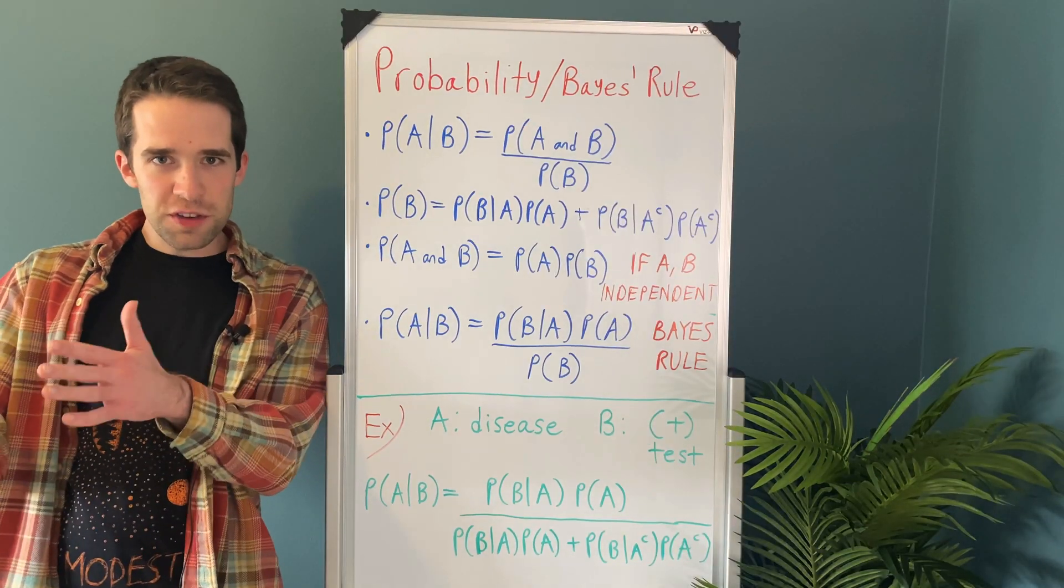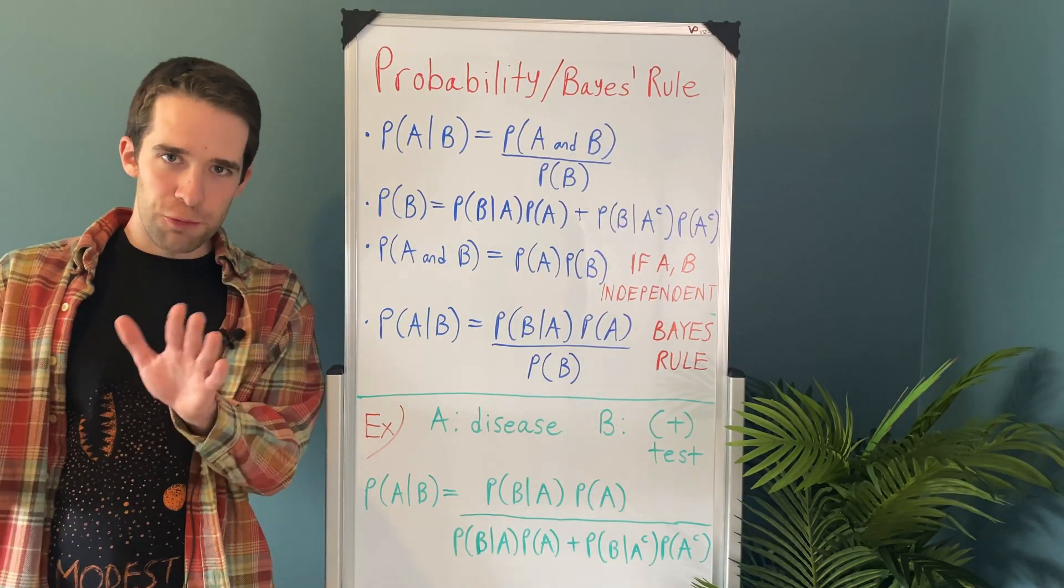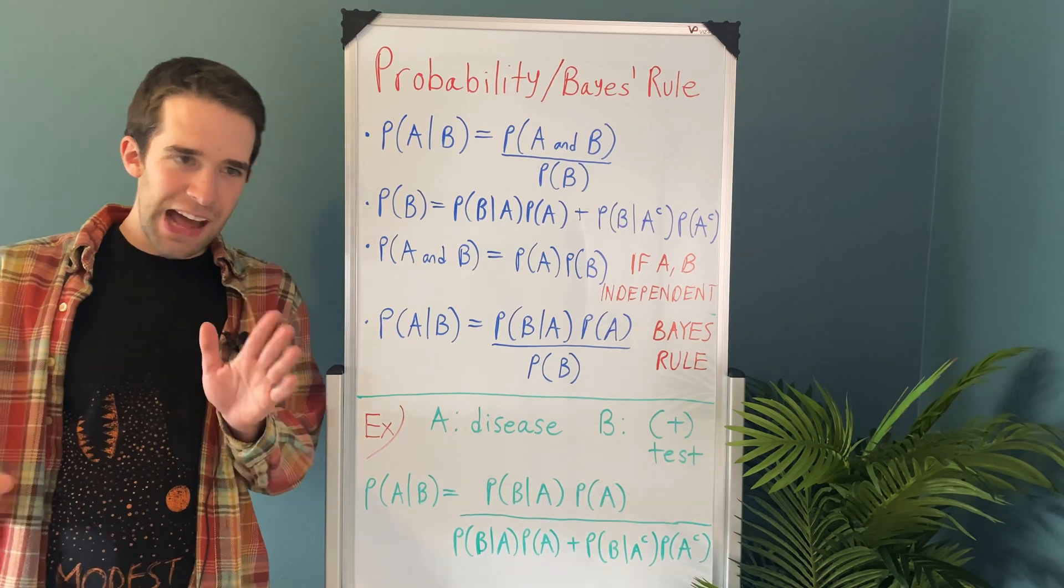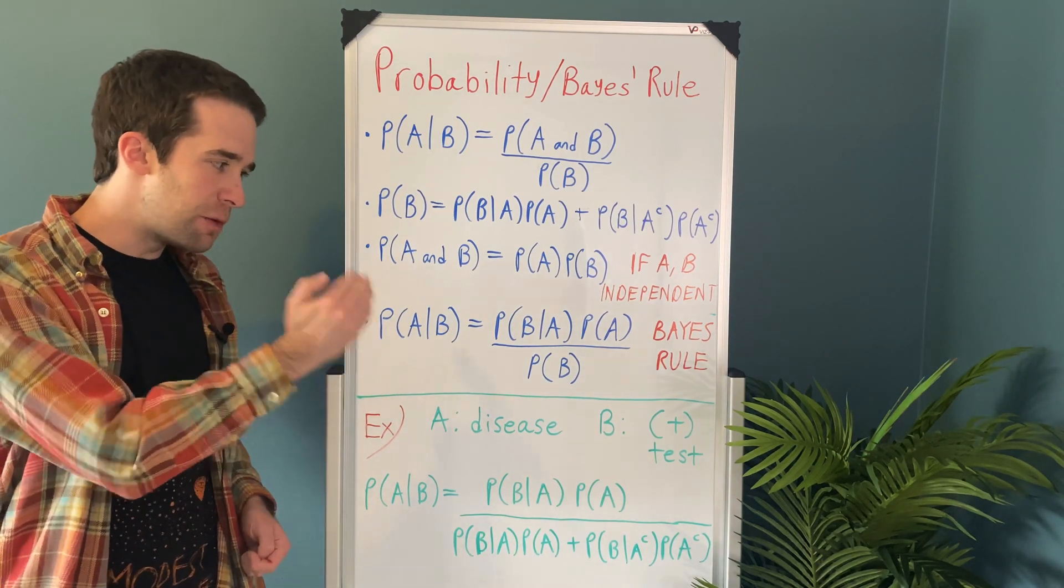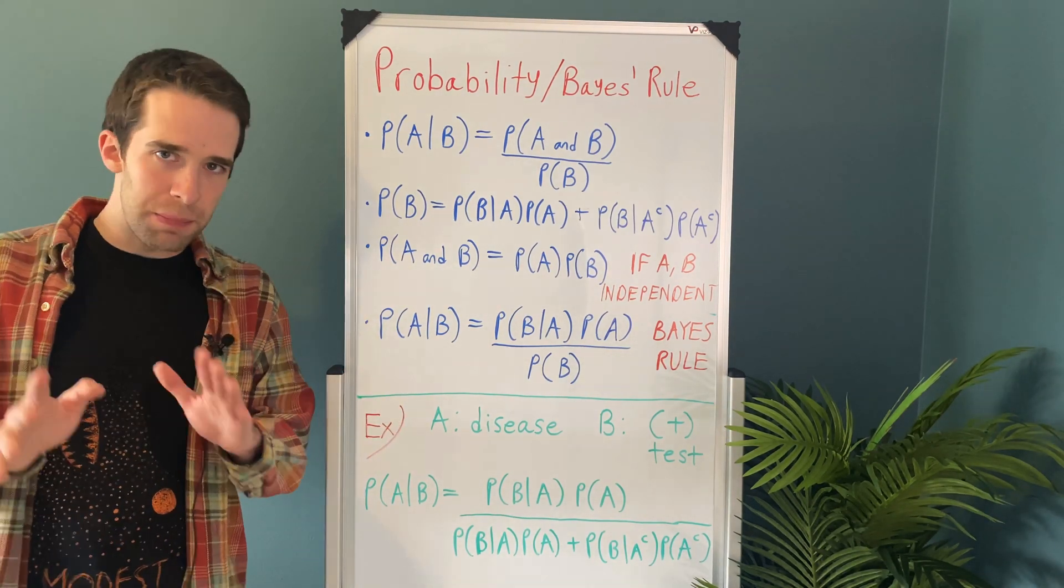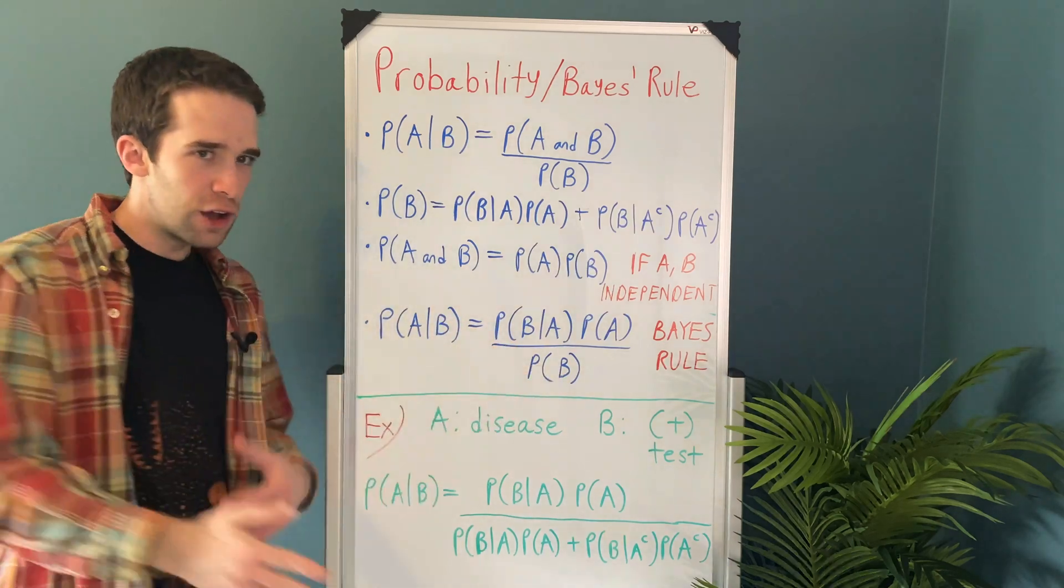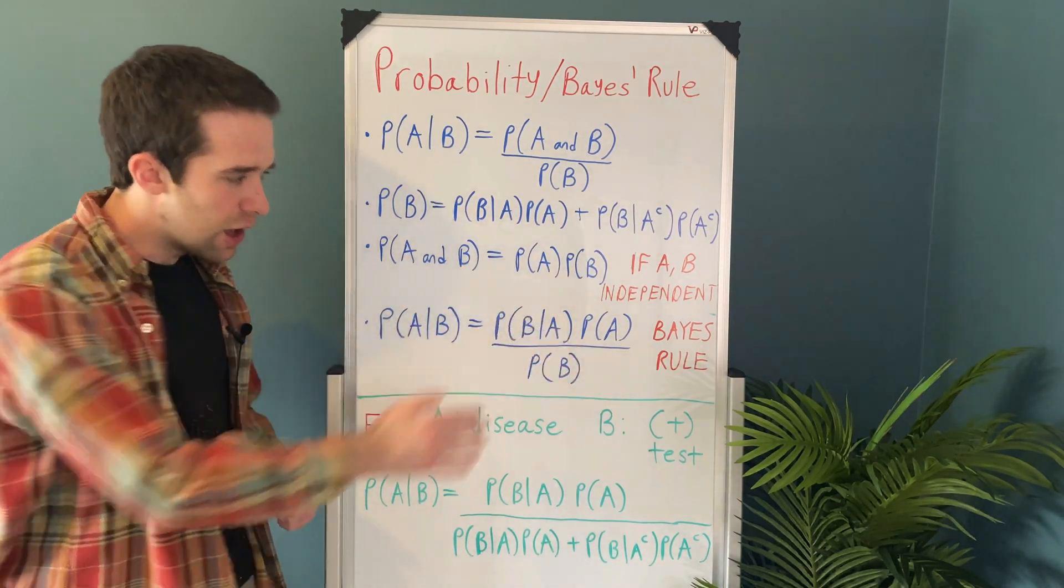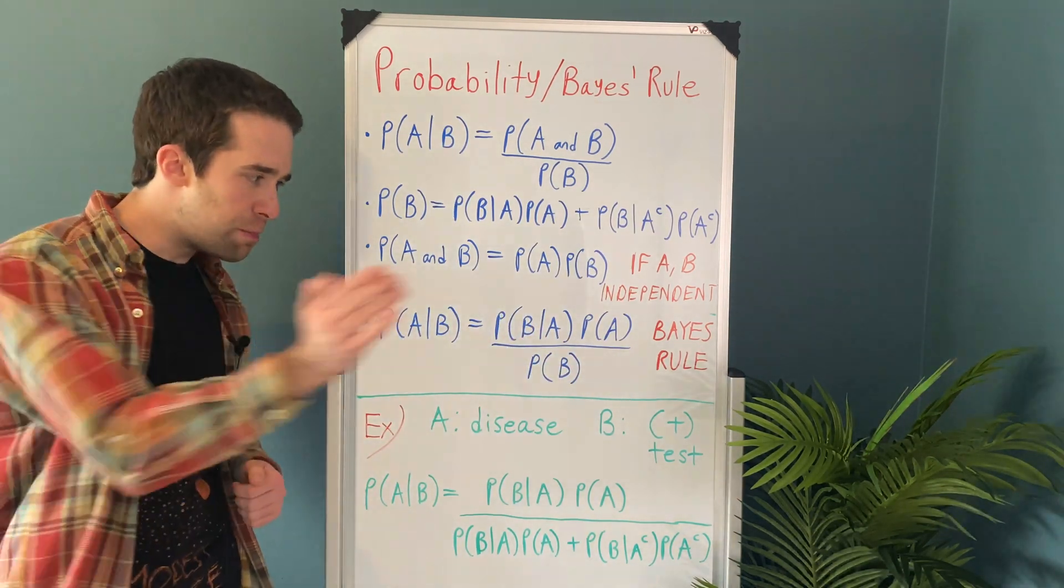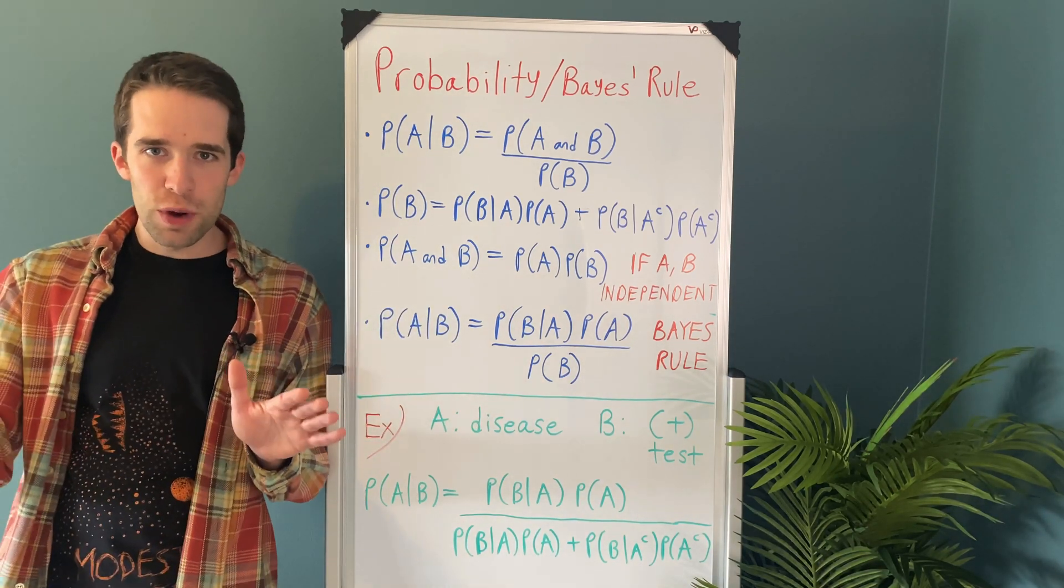Now, as far as Bayes' rule is concerned, it's a very simple formula. It's just the fact that the probability of A given B is equal to the probability of B given A times the probability of A divided by the probability of B. Simple. That's all there is to it.